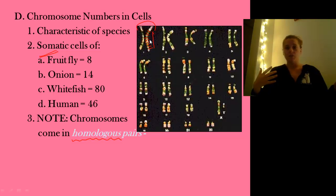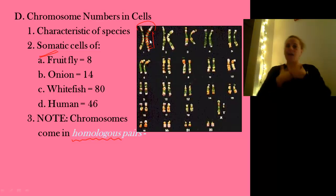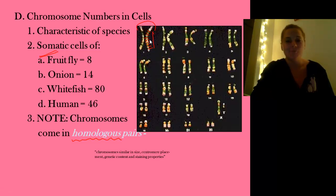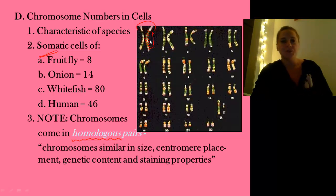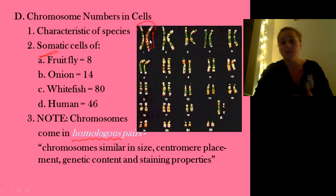Dad contributes 23 — one half of every pair that he has — and mom contributes 23 — one half of every pair that she has. And there you are. So homologous means similar in size, centromere placement, and the type of genes.